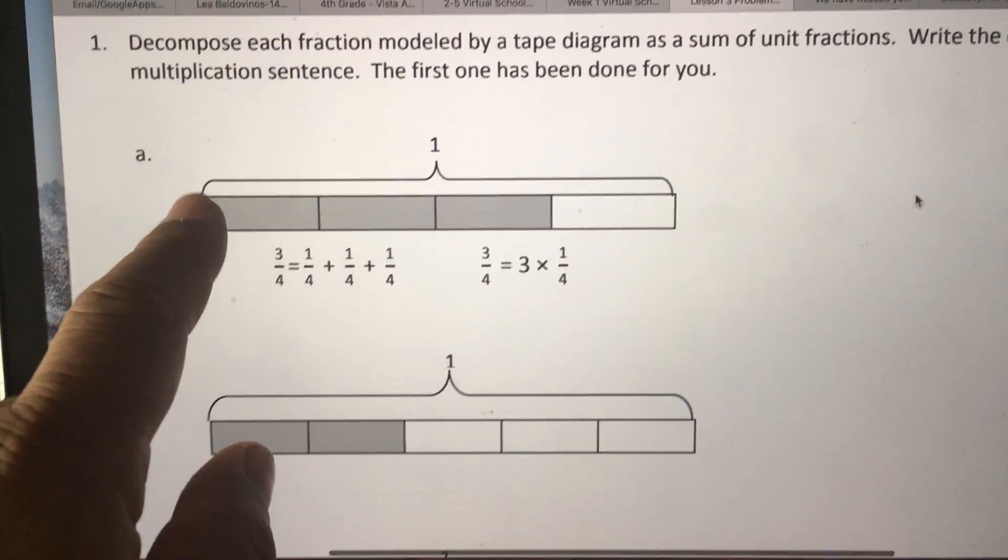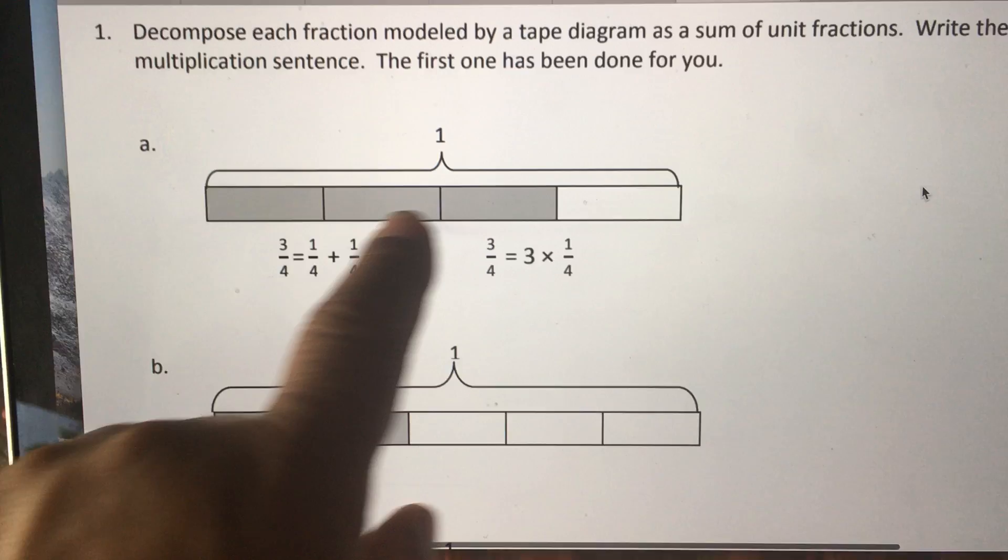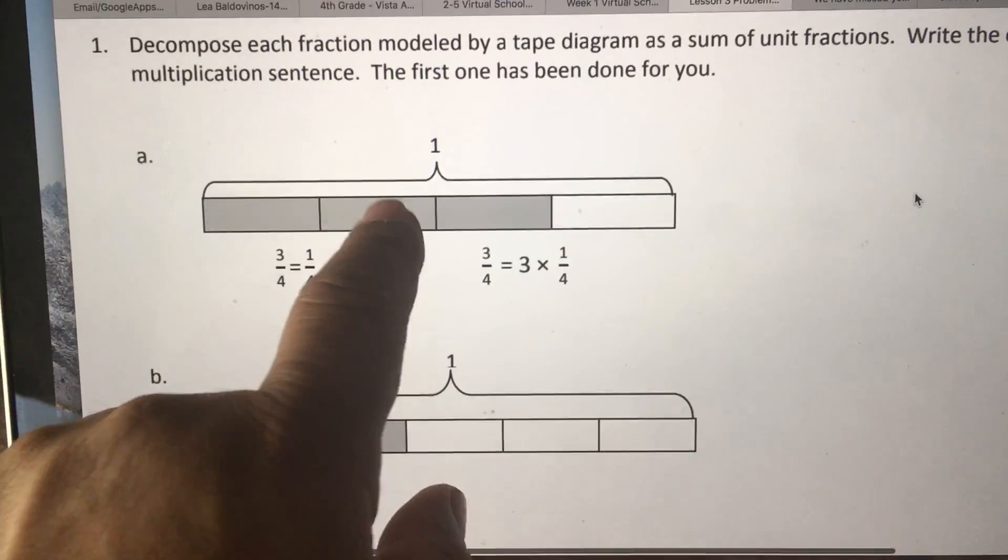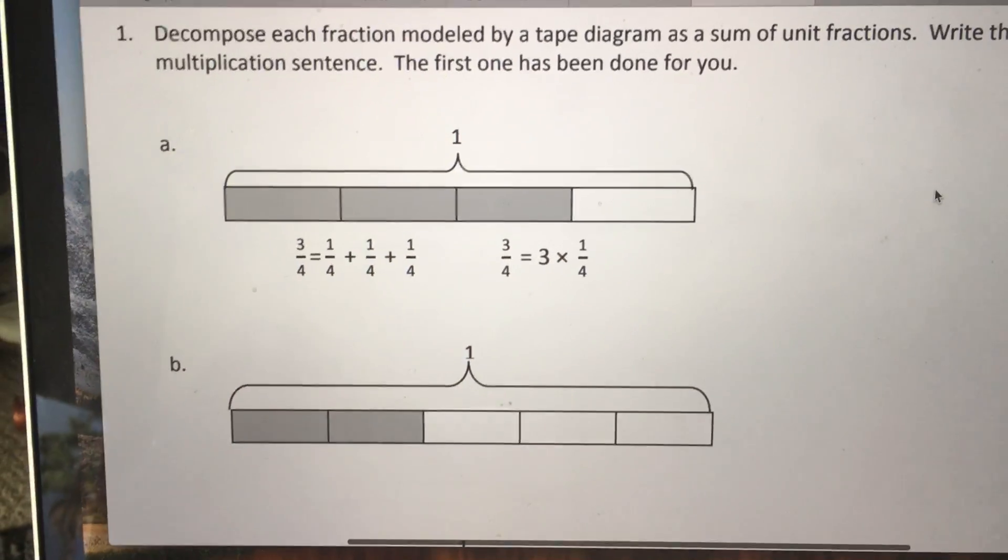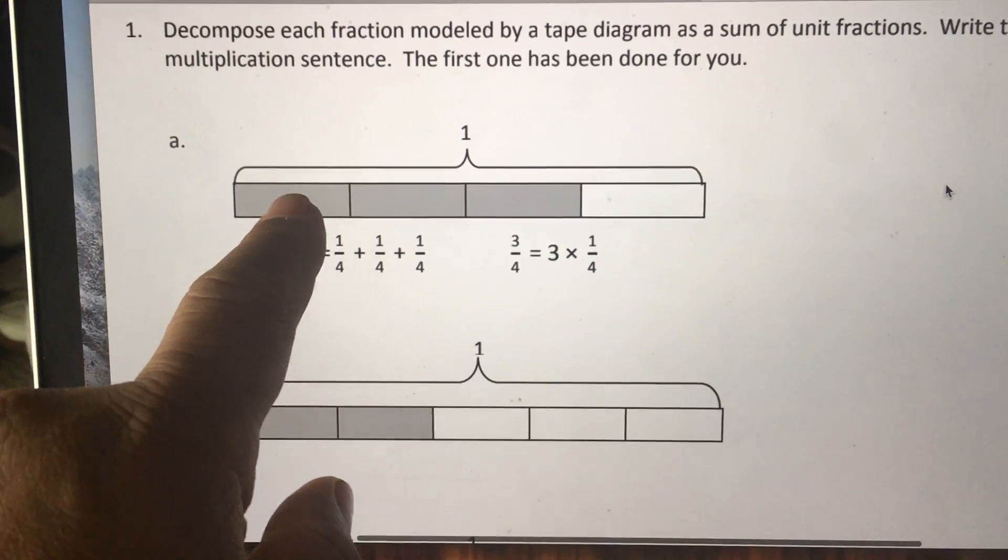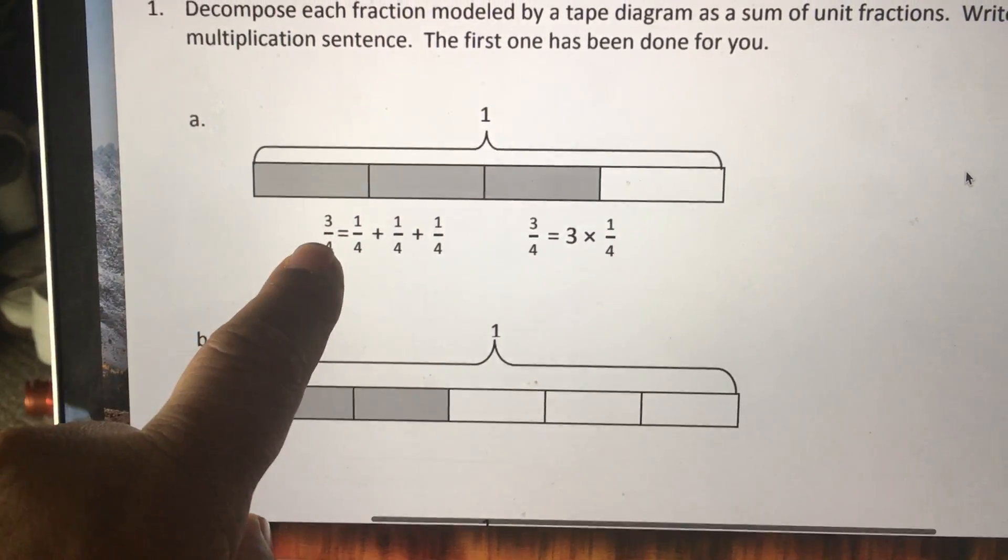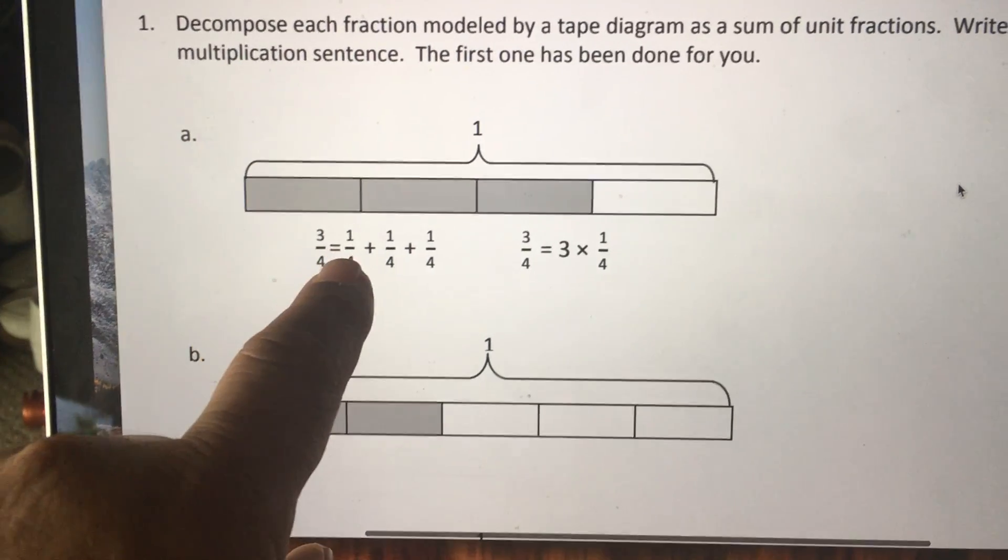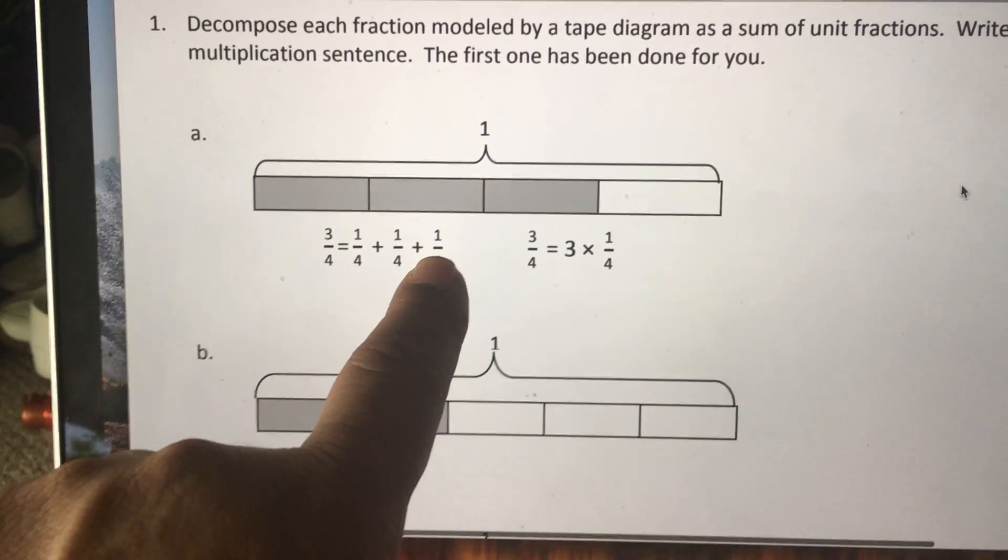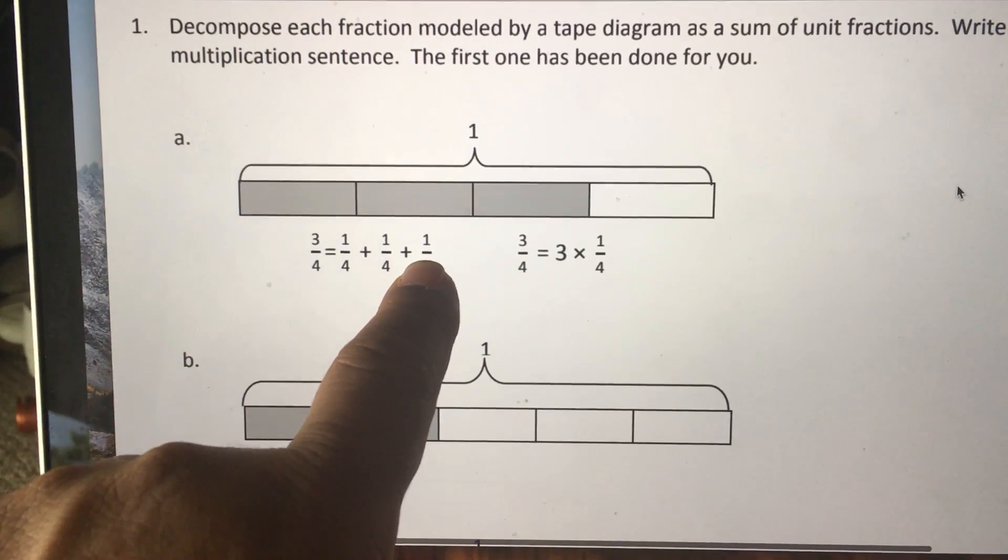So picture this has a whole big bar of chocolate, and it's cut up into four pieces or fourths. So shaded here are one, two, three pieces. So three out of four are shaded, which is the same as one-fourth plus one-fourth plus one-fourth. And another one, that's the sum.